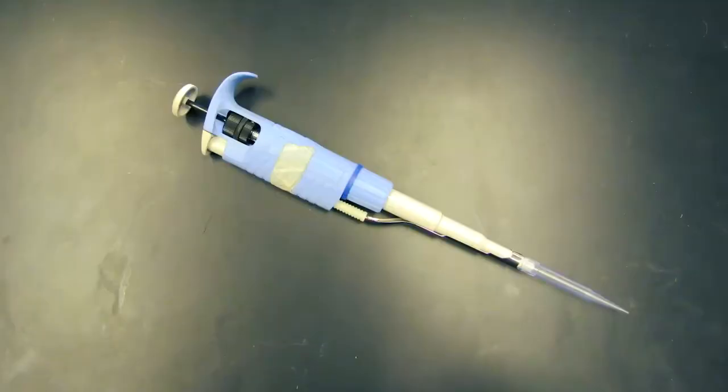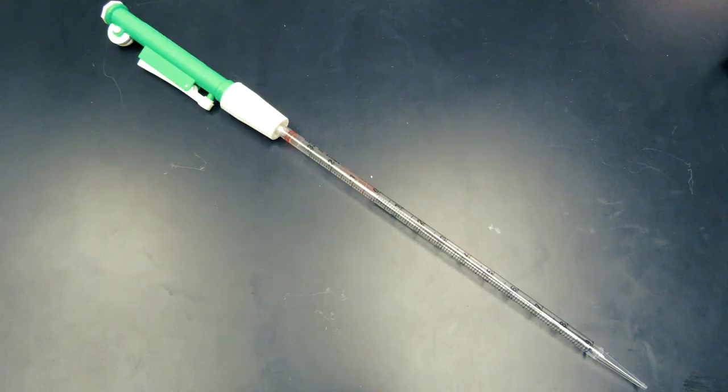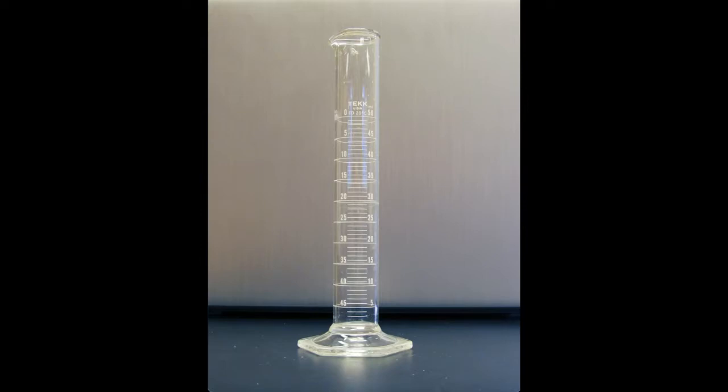Micropipettes are for measuring amounts less than 1 mil. Pipettes are for measuring 1 to 25 mils of liquid, and for liquid amounts greater than 25 mils, you should use a graduated cylinder. When using these measurements, scientists refer to milliliters as mils. Who calls them milliliters?